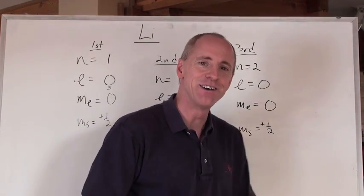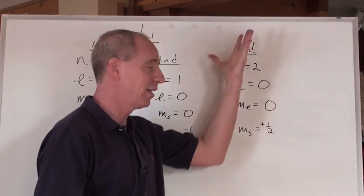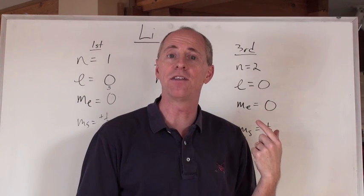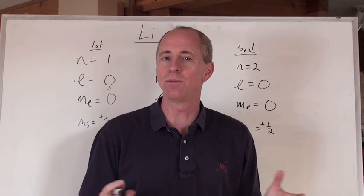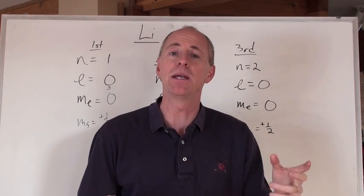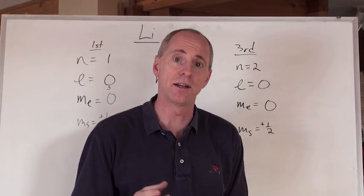And now we have the three sets of quantum numbers here for the electrons found in lithium. Now let me do one that's a little bit more complicated, and then you'll be able to see how to consecutively put these electrons in.